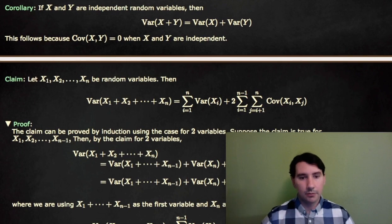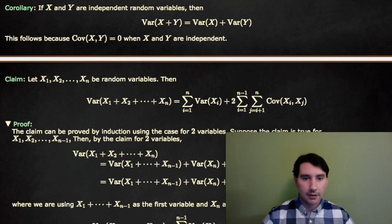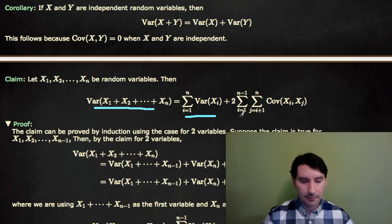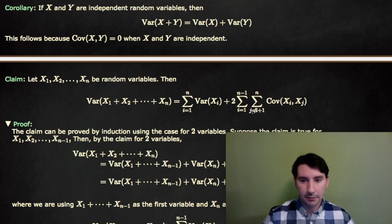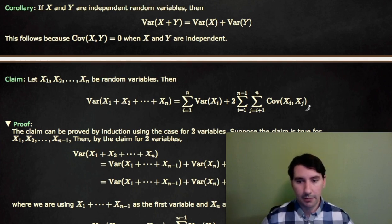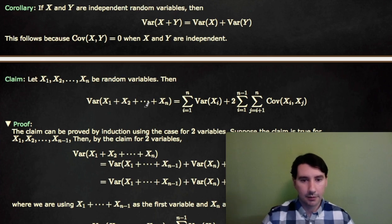This can be extended to more than two random variables. If X1, X2, through Xn are all random variables, then the variance of the sum is the sum of the variances plus 2 times the sum of the pairwise covariances. This is written as 2 times the sum from i equals 1 to n minus 1, and j equals i plus 1 to n, of the covariance of Xi and Xj — summing over all possible pairs.